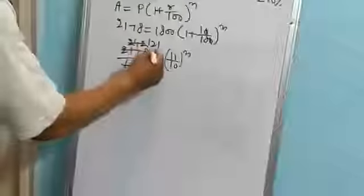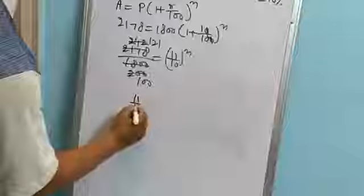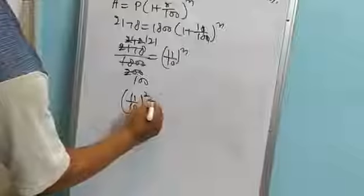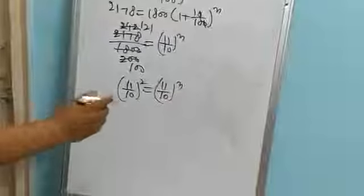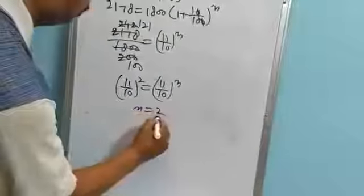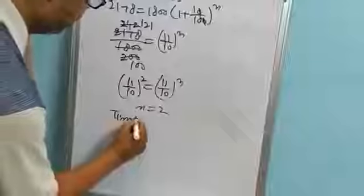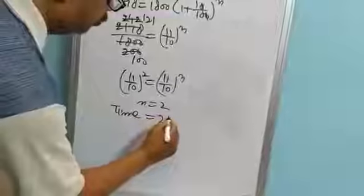Again, make this into the power of 11 by 10, that is 11 by 10 square equals 11 by 10 to the power N. Here the base is same, so power is also equal. That is N is equal to 2.